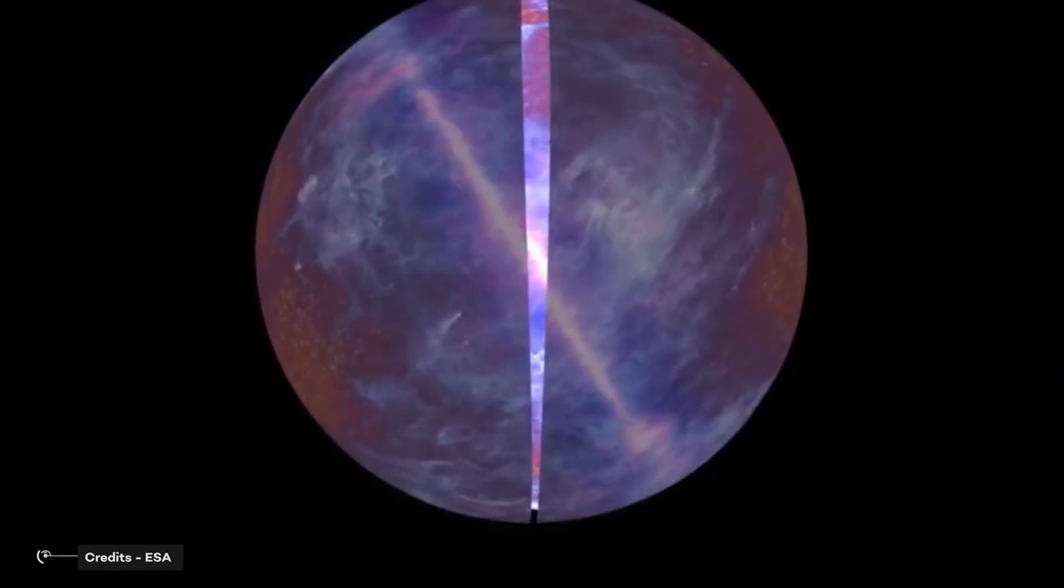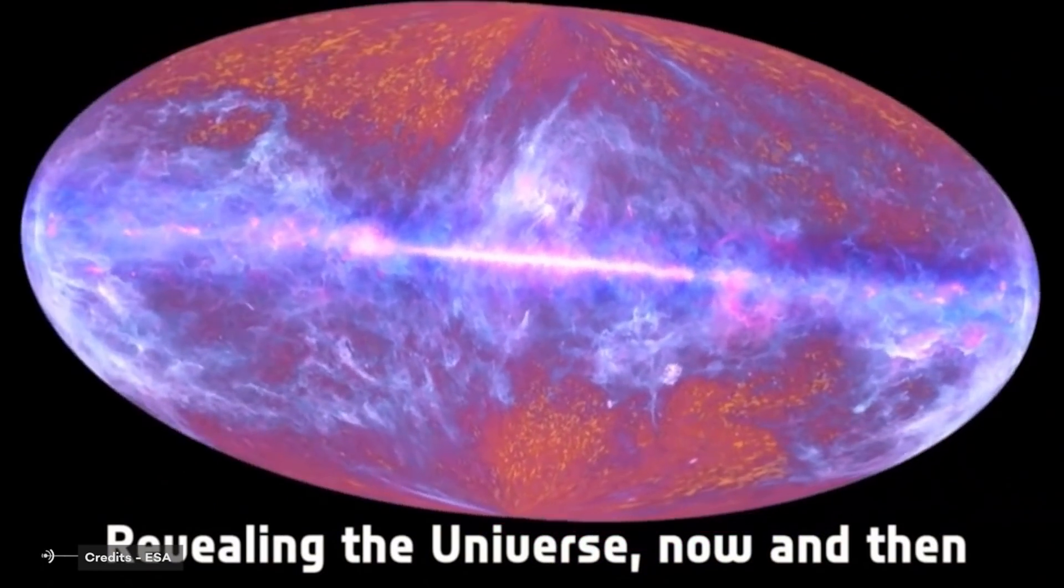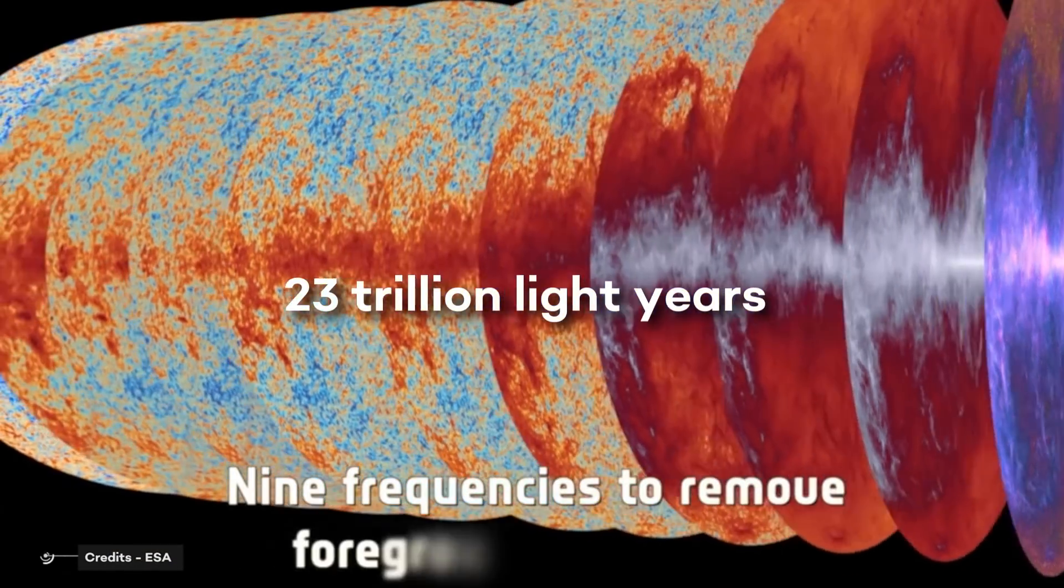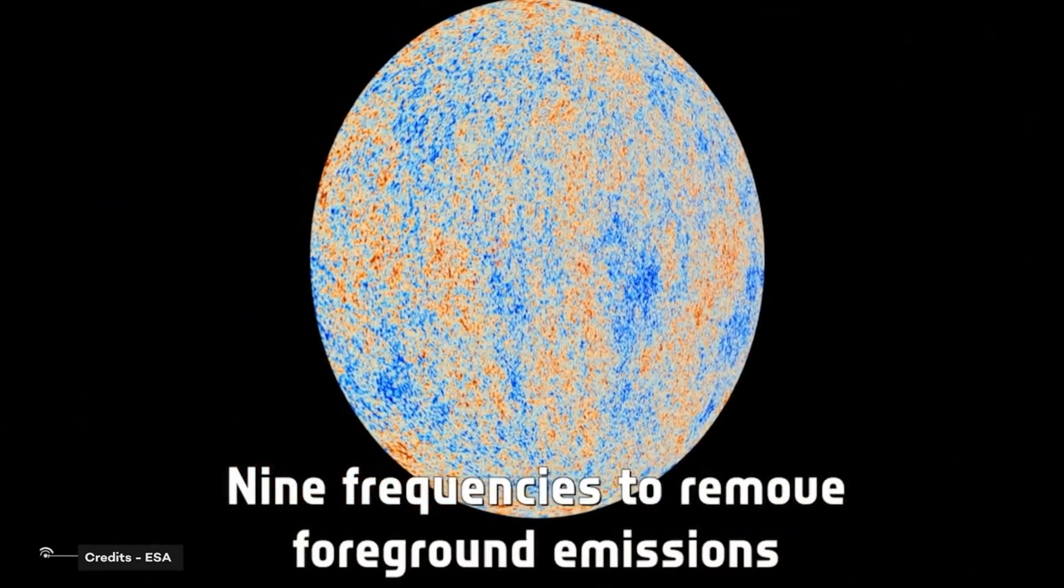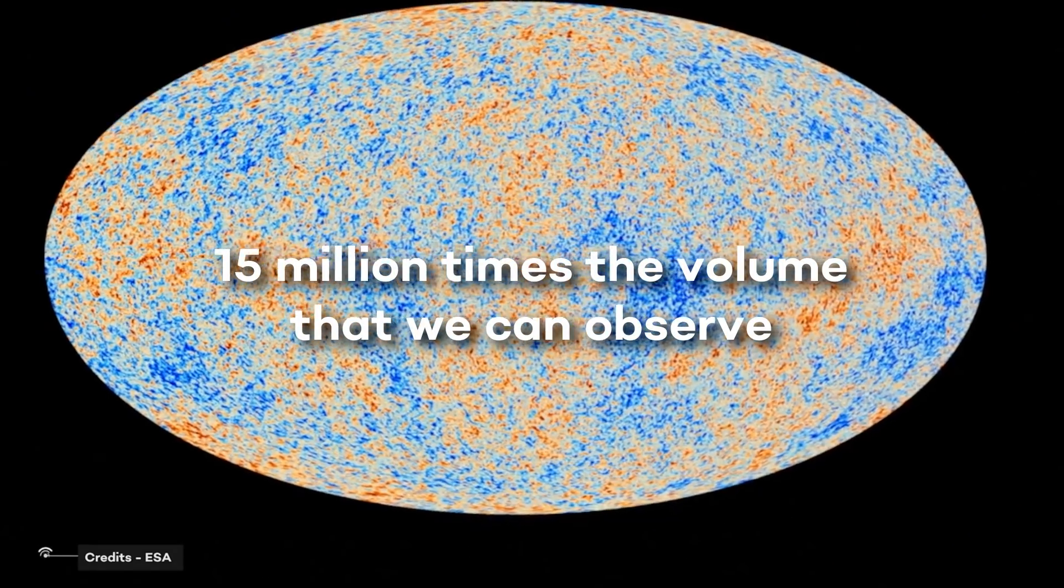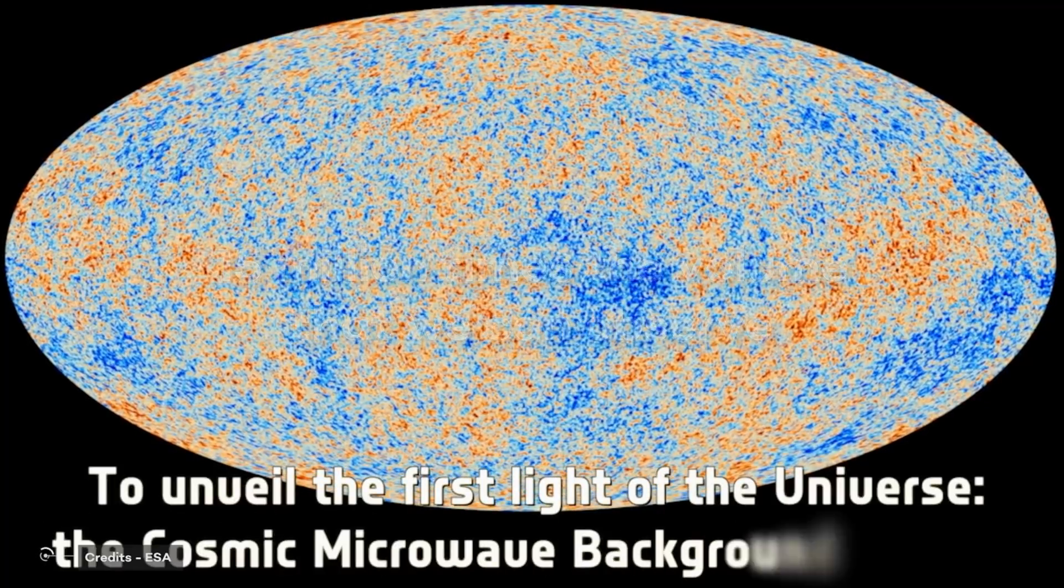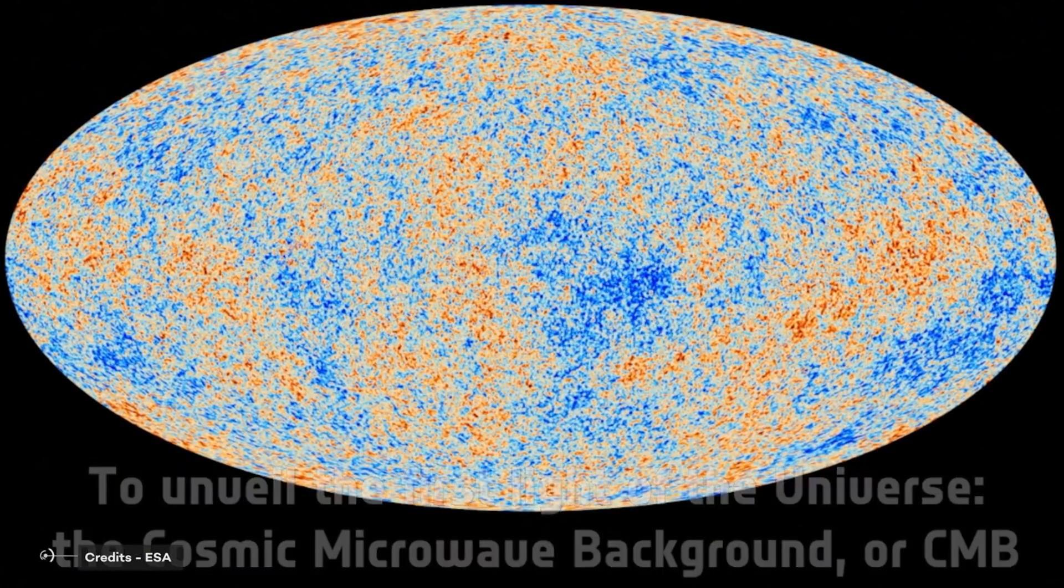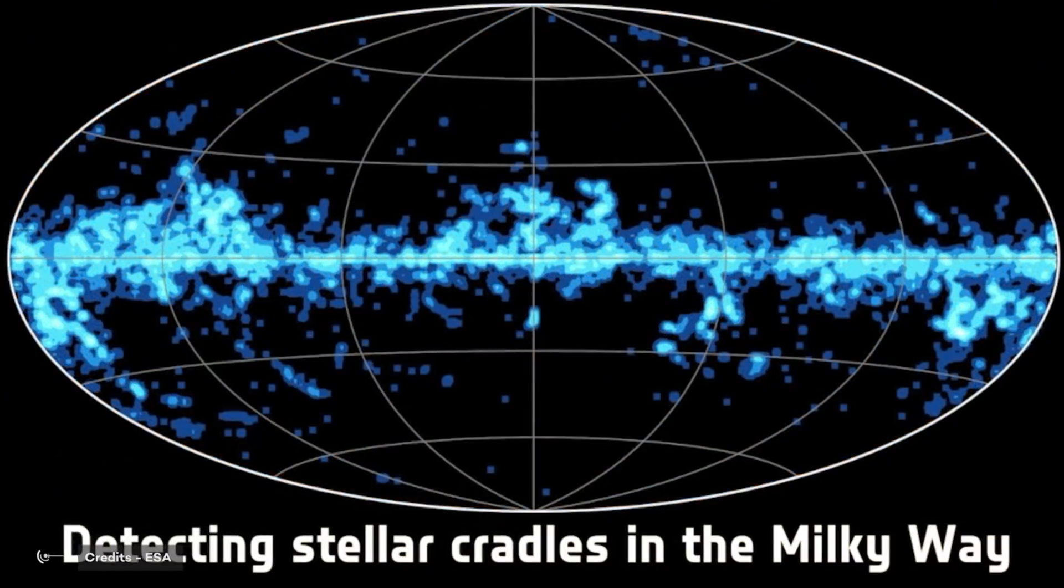This means that the unobservable universe, provided there is no topological insanity, must be at least 23 trillion light-years in diameter and contain a volume of space greater than 15 million times the volume that we can observe. However, if we are willing to speculate, we can argue quite strongly that the unobservable universe should be significantly larger than that.